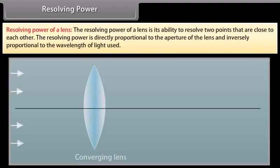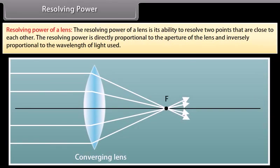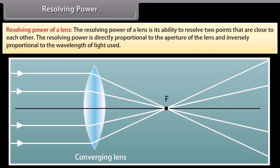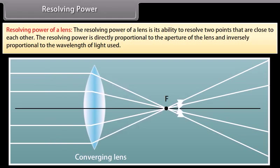The resolving power of a lens is its ability to resolve two points that are close to each other. The resolving power is directly proportional to the aperture of the lens and inversely proportional to the wavelength of light used.